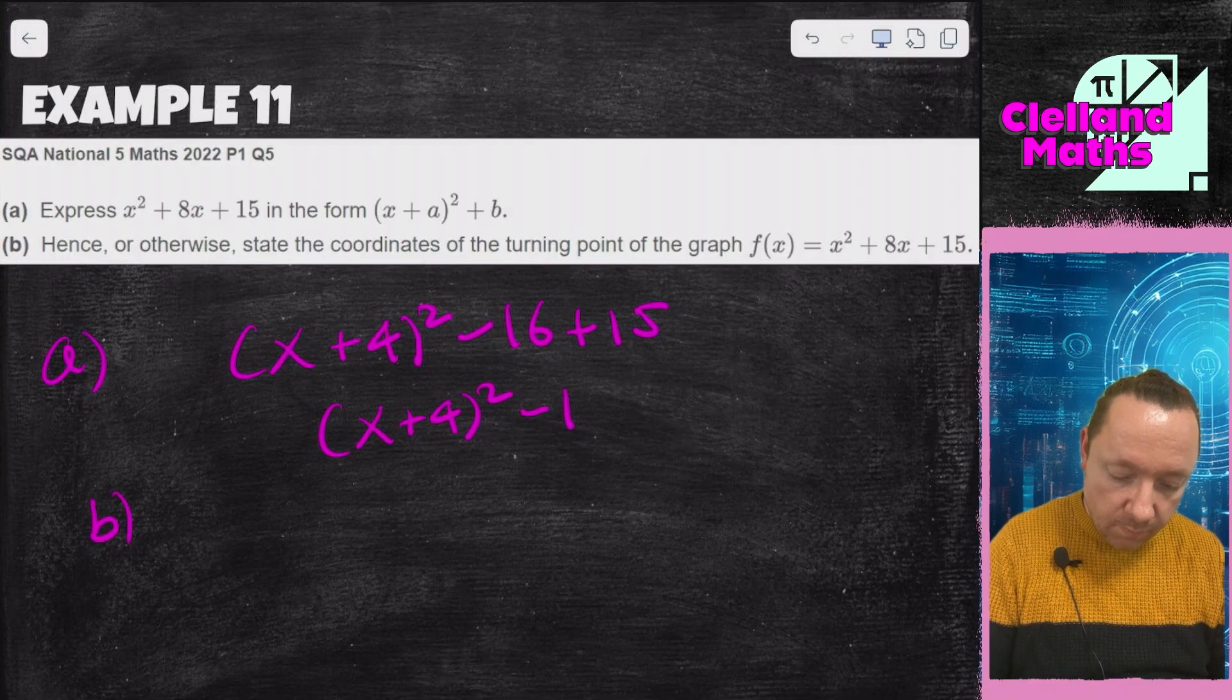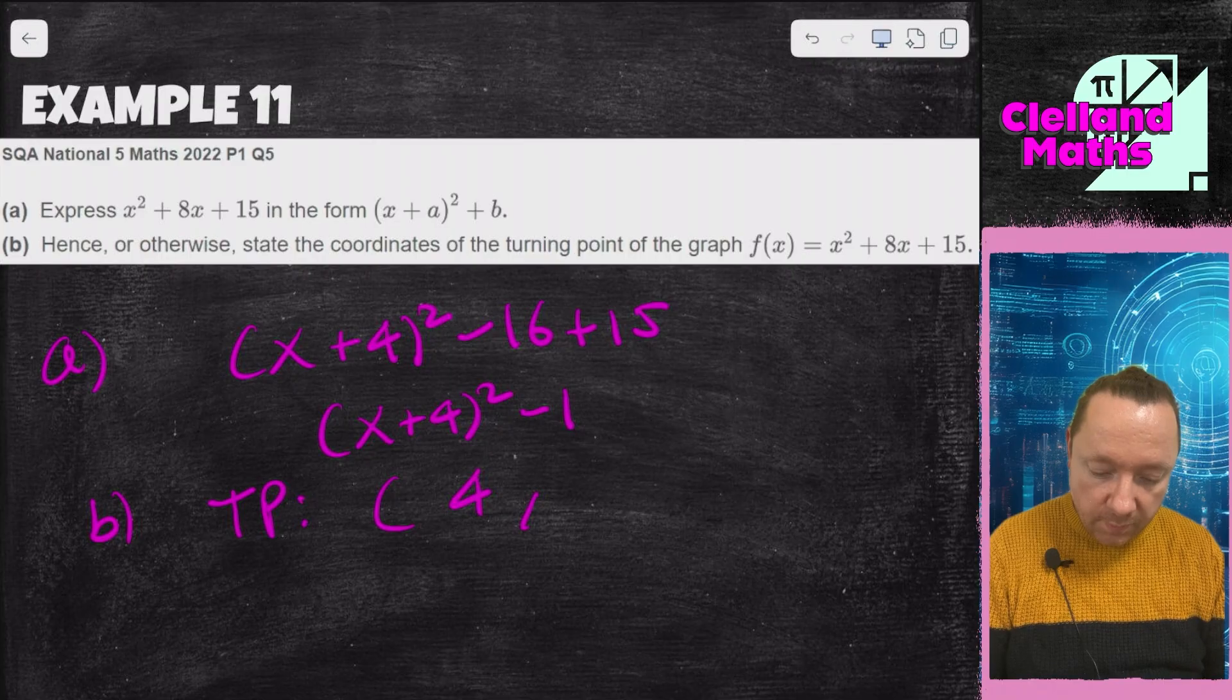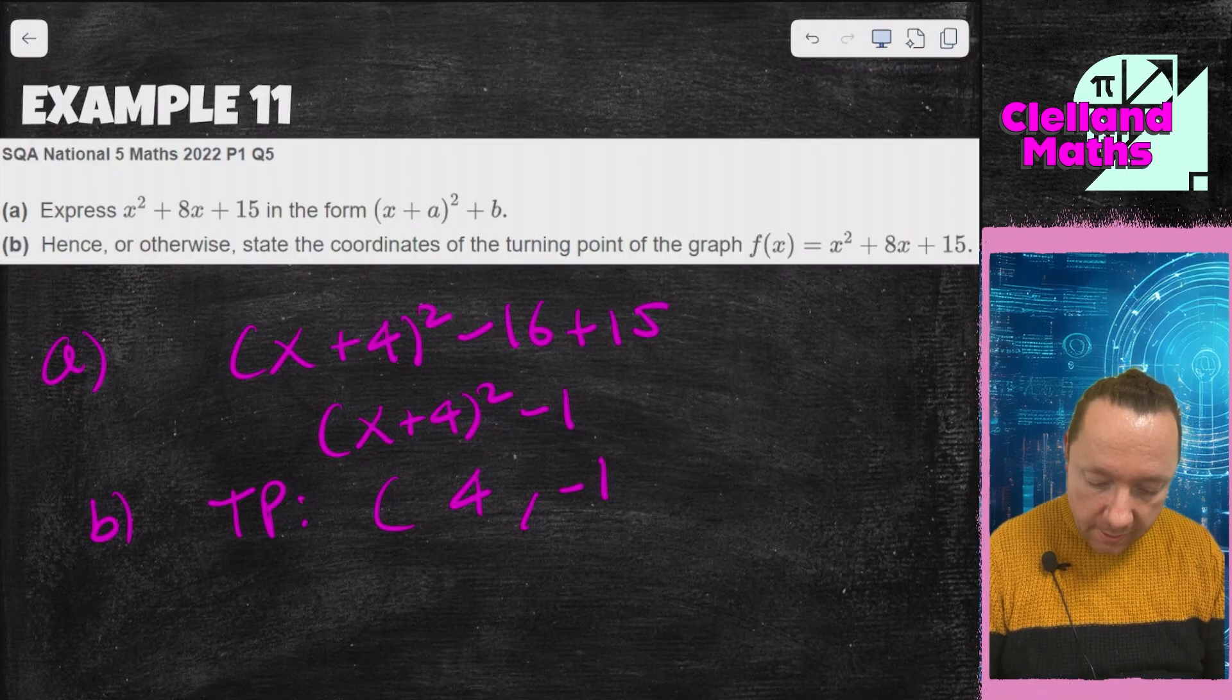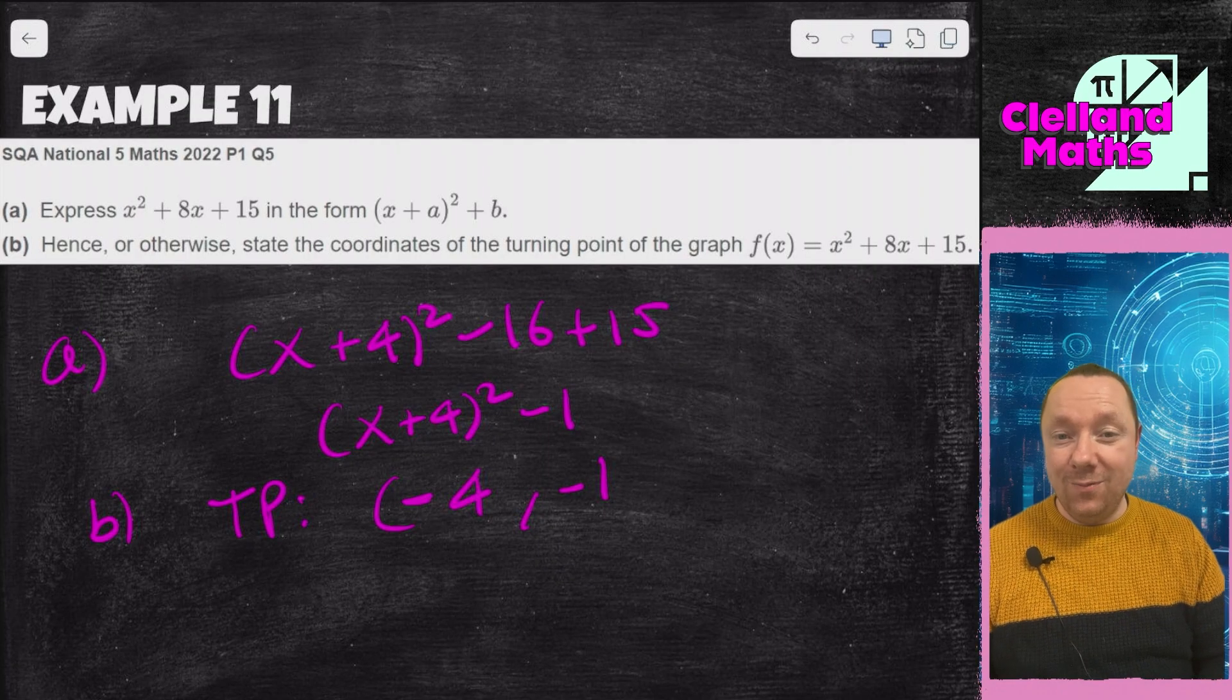Part b, the turning point is easy because you just look at your numbers. It's going to be 4 and it's going to be minus 1, but the sign changes on the first one. So it's minus 4, minus 1. And we're done there.